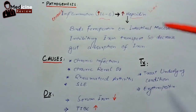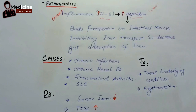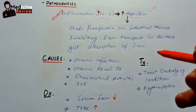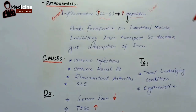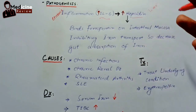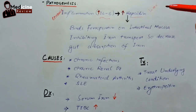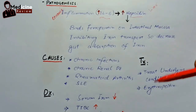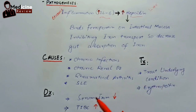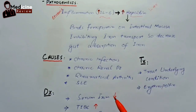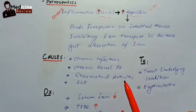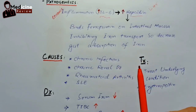Any autoimmune disease, being very chronic in nature, can lead to this pathogenesis and result in anemia of chronic disease. The symptoms and signs are almost the same as for every anemia — all the general anemia features will be present.